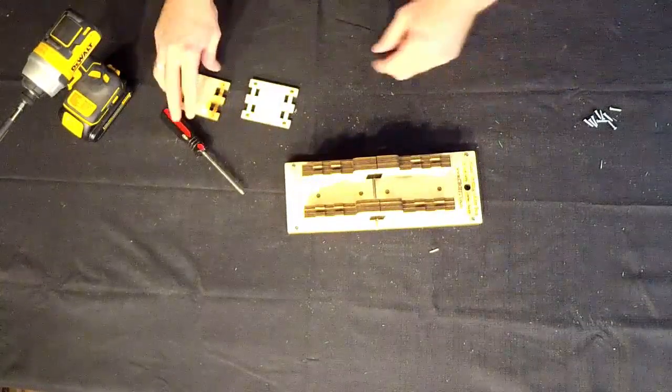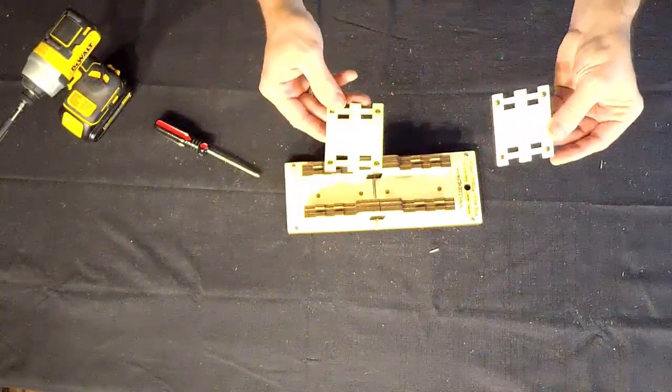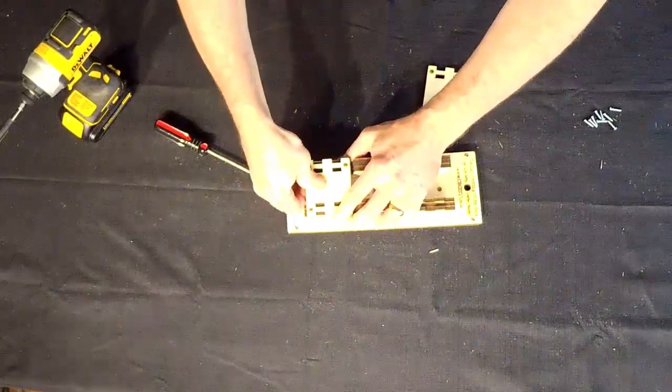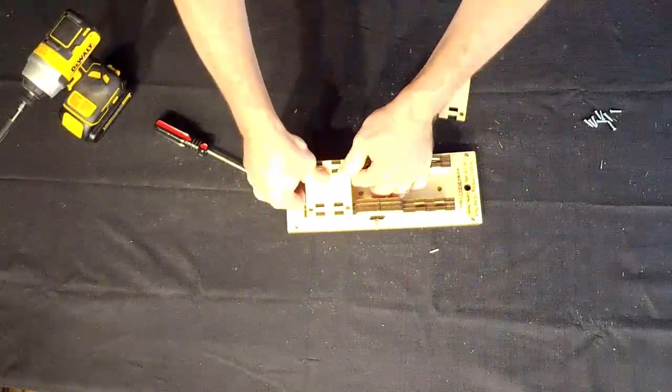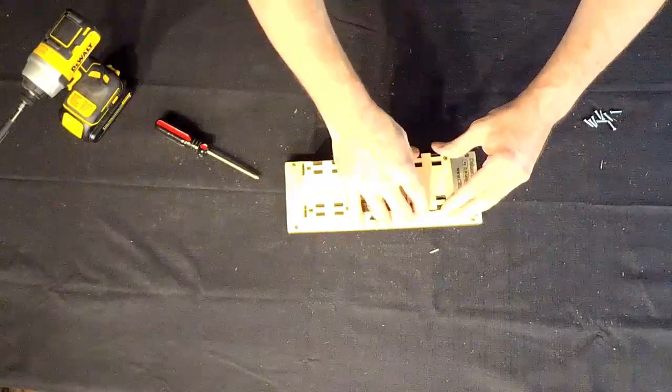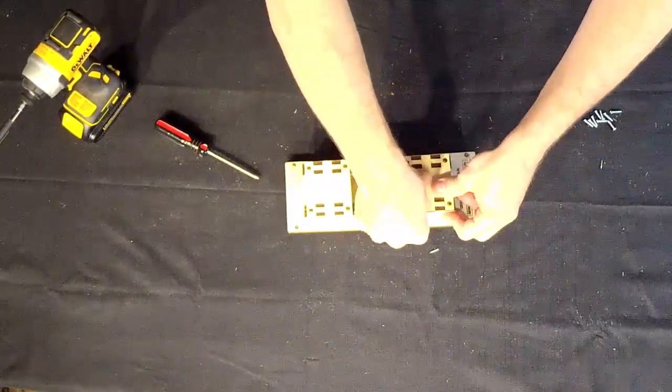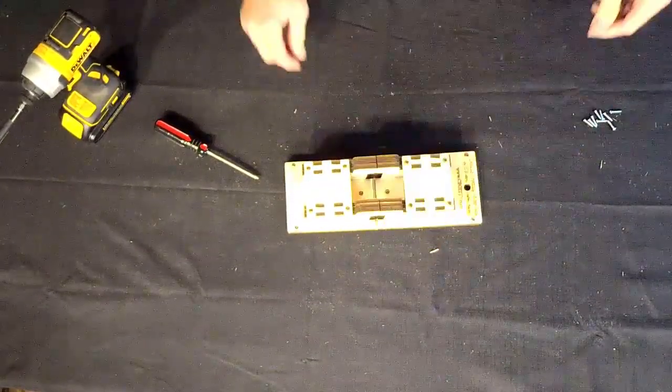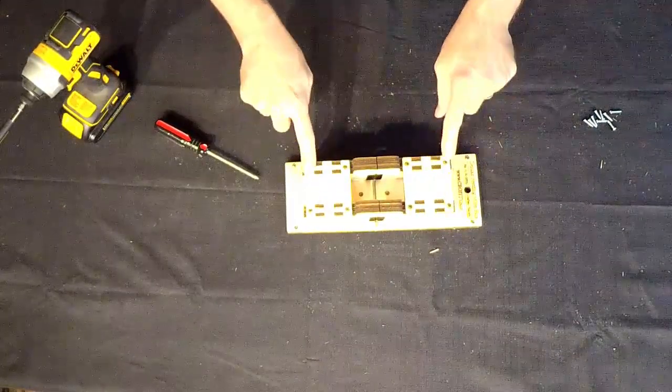Finally, take the two top brace pieces and work them into place over the tabs on the top sides of the miter box. You might have to wiggle them around a little bit to get them seated in place, but once in place, put in the final eight screws.